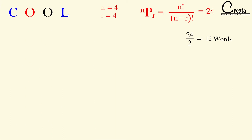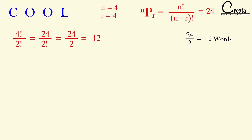Basically, whenever we have to form different arrangements from a given set of letters and some letters are repeating, we have to divide our answer by the factorial of that repeat count. Here the letter O is repeating 2 times, so we get our answer as 4 factorial upon 2 factorial, that is 24 divided by 2, which is 12. We have to divide the traditional answer by the factorial of the number of times a letter is repeating.